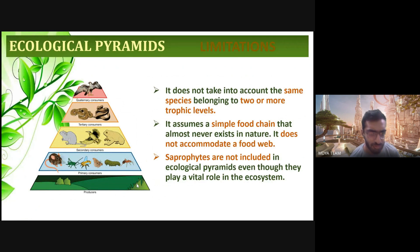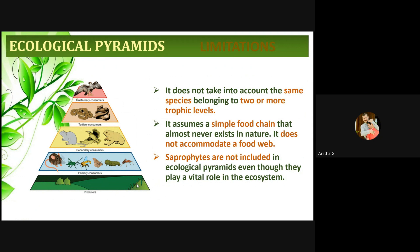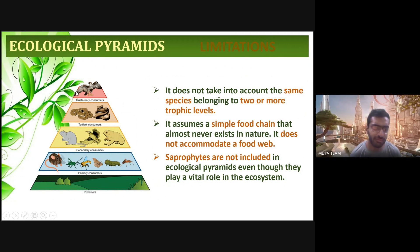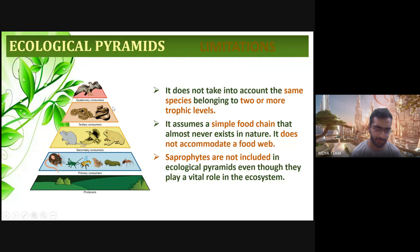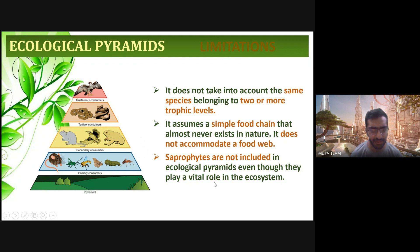Saprophytes are the organisms in the ecosystem — such as decomposers — which feed upon dead organisms. As you can see in the ecological pyramid, those are not mentioned. That is the limitation: even though saprophytes play a vital role, they are not included. If one consumer dies and its remains are not consumed by decomposers, those dead things would accumulate and cause many problems.